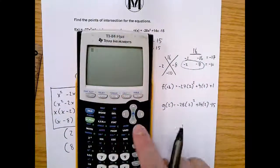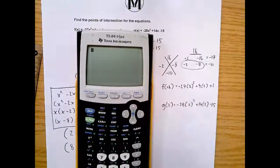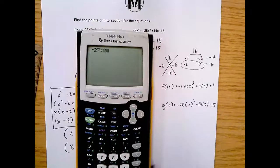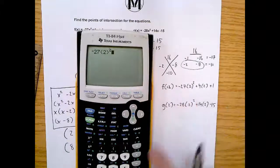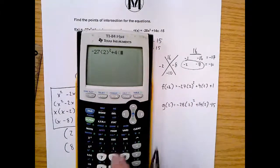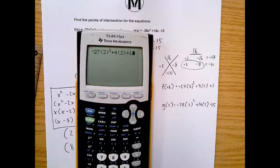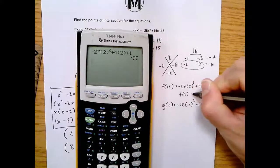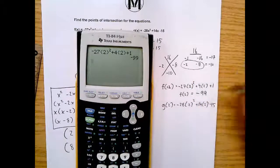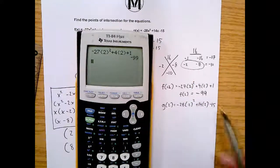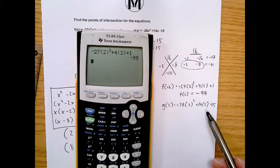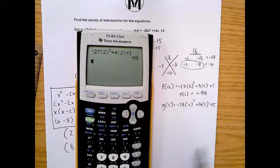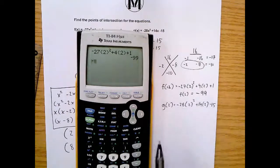I'm just going to use my calculator and put this in. -27(2²), that's that, plus 4(2) + 1, and hit enter. And I get f(2) should be -99. So if all goes to plan, this one should also tell me it's -99, because we're trying to find out where they're the same. So let's try it.